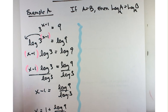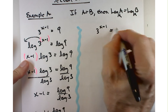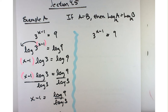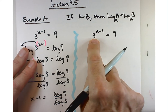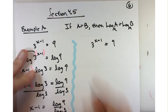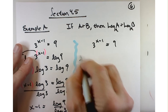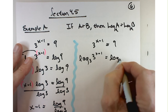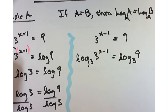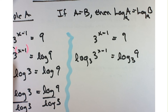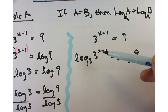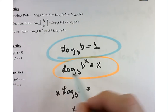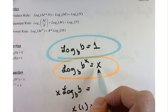Here's where you should start taking notes again. 3 to the x minus 1 equals 9. I said you can take log of any base, and so what I would suggest is that we choose the base that matches this number here. Let's take the log base 3 on both sides. So log base 3 of 3 to the x minus 1 equals log base 3 of 9.